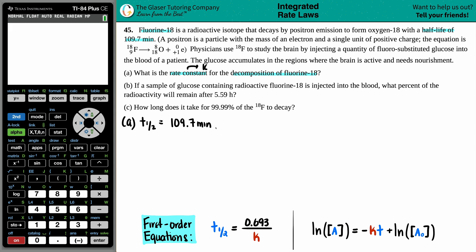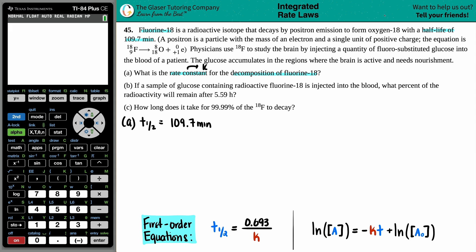If the question was nice, it would tell you explicitly that fluorine-18 goes by first-order kinetics. But re-reading the problem, there's no indication of any order. However, just know that if you're talking about decaying, positron emission, or basically a single element breaking down — carbon, fluorine, sodium, lithium — those will always break down via first-order. So because we're just talking about fluorine here, that's first-order. All single elements follow first-order kinetics.